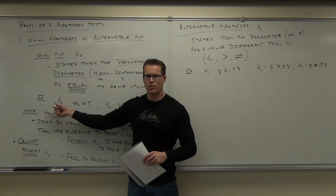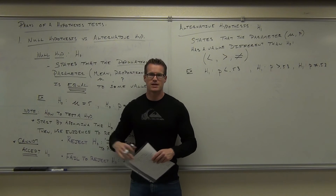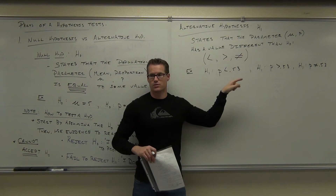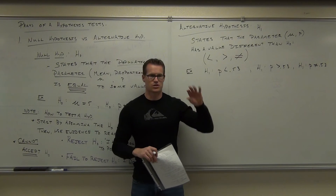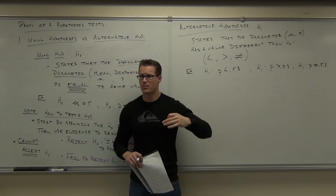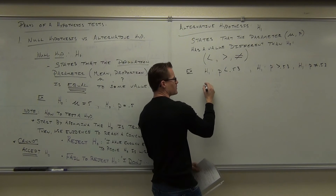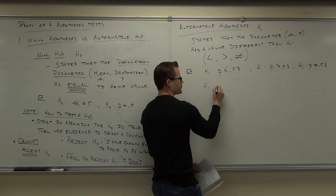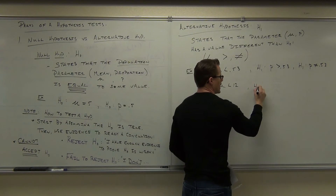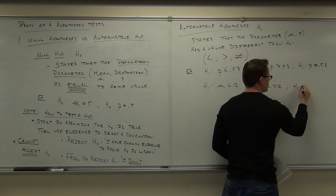H sub zero is always going to have an equal sign — it's always a statement of equality. Is H sub one ever going to have an equal sign? Not unless there's a line through it — that means not equal. There are three options. If you're talking about a mean rather than a proportion, you could have mu less than a given value, or mu greater than, or mu not equal to.